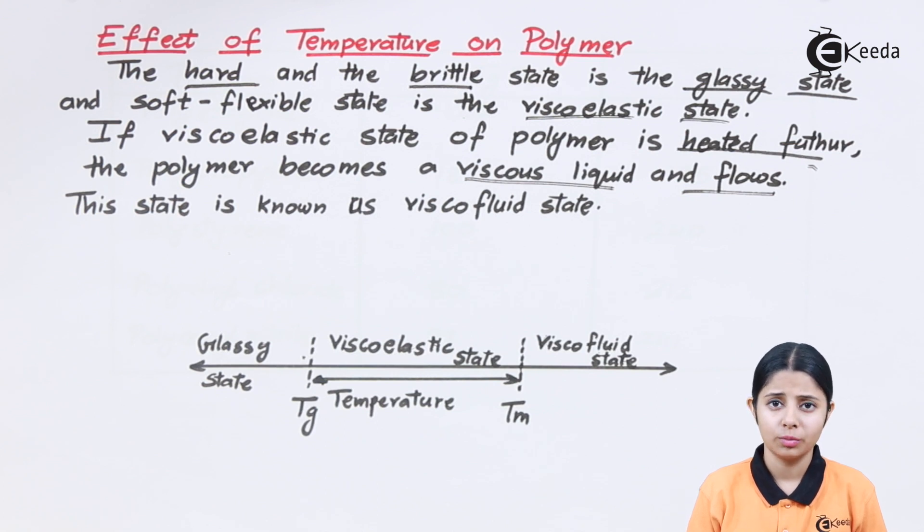There will also be a solid structure in the polymer. The polymer will not flow, the polymer will not stay rigid. It's a state between the solid and liquid state, and that state is known as the viscoelastic state.